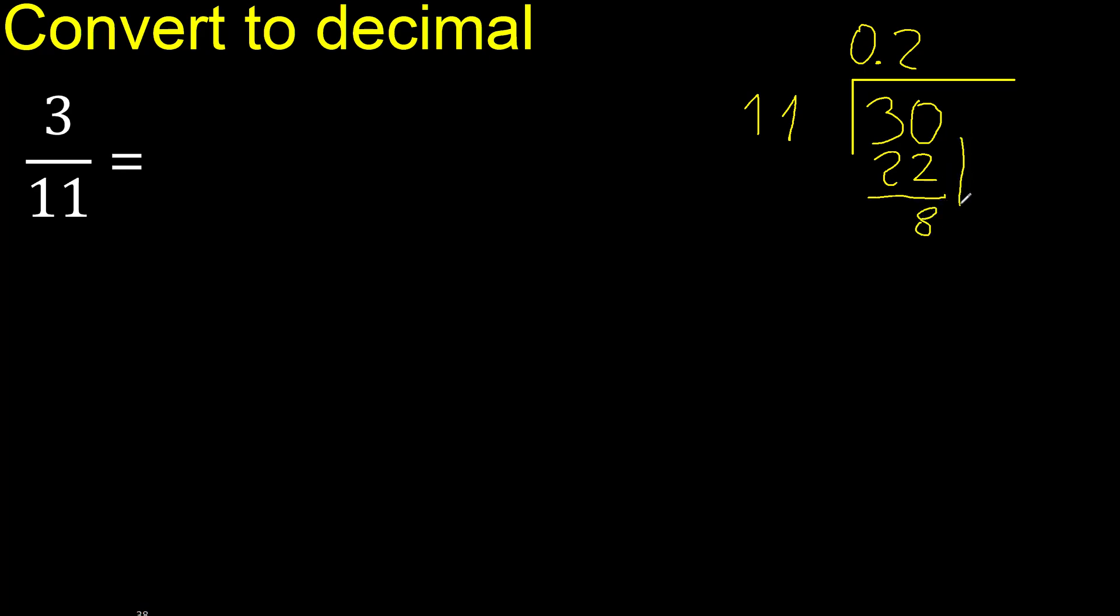Next there is no number, therefore complete with 0. Point is here, 0 point, ok, point 80. 11 multiplied by 8 is greater. Multiplied by 7, 77. Subtract complete, 30. 11 multiplied by 2. Subtract complete, 80. 11 multiplied by 7.